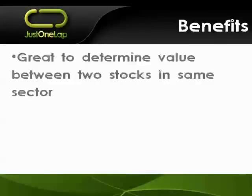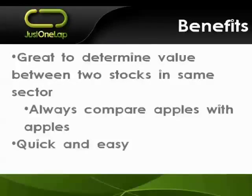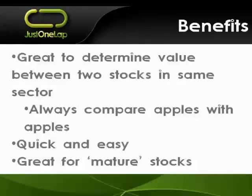The key benefits: it's great for determining value or valuation between two stocks in the same sector. Always apples with apples. It's quick, easy, and it's good for mature stocks — those boring blue chips, the big top 40 shares that aren't growing at 30, 40, 50, or 100% per year. Once a share is growing that fast, PE becomes a little wonky and you need to move to the PEG ratio. PEs are better for mature stocks and income stocks with dividend yields of more than 2 to 2.5% per year, as opposed to high-growth stocks like Capitec and NASPAS.